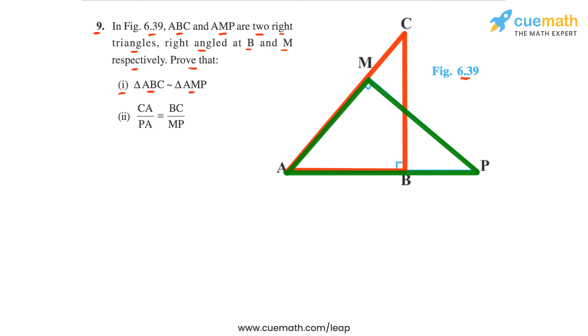This part is actually very easy. We just need to compare the angles of these triangles. We see that this angle at A is common to both triangles, and in triangle ABC this angle is 90, and in triangle AMP this angle is 90. So we can apply the AA similarity to get the two triangles as similar. Let's write this.